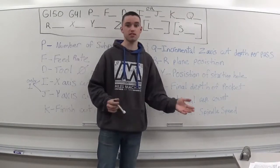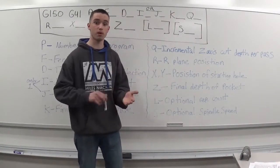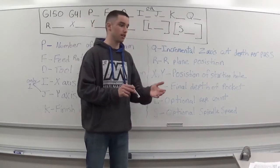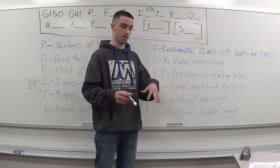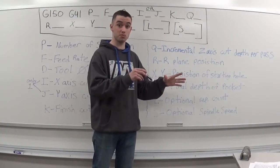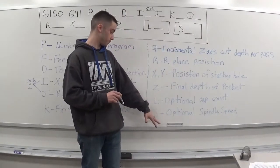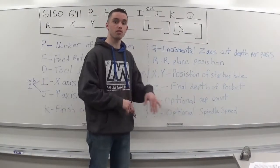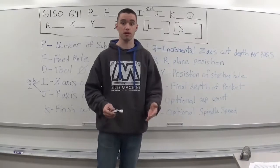The optional spindle speed is nice because let's say you're using the same mill to profile your part. After you're done profiling your part, then you come over to do your pocket. And let's say when you're profiling your part, you have a different spindle speed, and then when it comes time to do your pocket here, you have a different spindle speed. So you can change your spindle speed, which is quite nice.